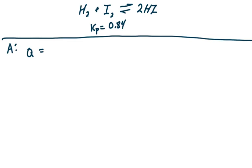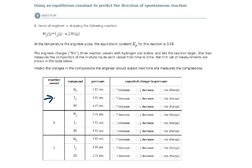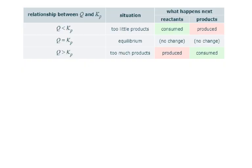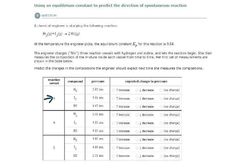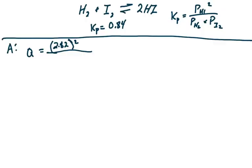We're going to take the partial pressure of H2 in this A reaction vessel, which is 2.82. So 2.82 squared, following the equilibrium constant expression here, which is Kp equals the partial pressure of HI squared divided by the partial pressure of H2 times the partial pressure of I2. So the partial pressure of H2 is 2.82 and 3.91 for I2, so 2.82 times 3.91.